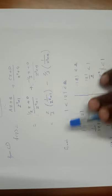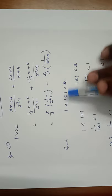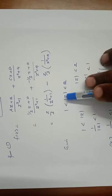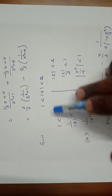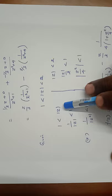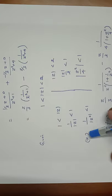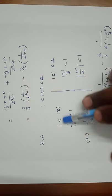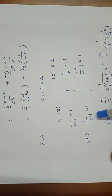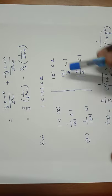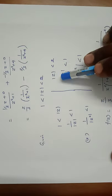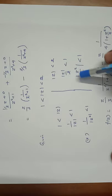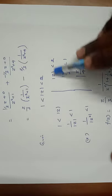Now applying the annular region condition 1 < |z| < 2. This splits into two parts: from 1 < |z|, we get 1/|z| < 1, so 1/|z|² < 1. From |z| < 2, we get |z|/2 < 1, so |z|²/4 < 1. These conditions determine which form of the series expansion to use.